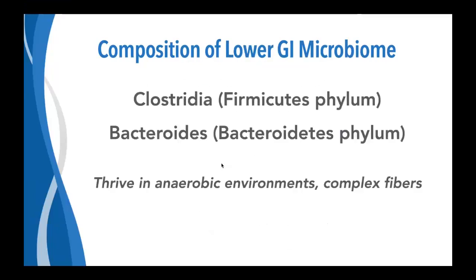By contrast, the lower GI microbiome largely consists of the Clostridia class — different from the Bacilli class though both are in the Firmicutes phylum — and the Bacteroides group within the Bacteroidetes phylum also tends to be pretty dominant. These organisms thrive in anaerobic environments and subsist largely on complex fibers — a big difference from the upper GI — illustrating how differences in physiology and nutrient availability drive the microbial differences along the GI tract.